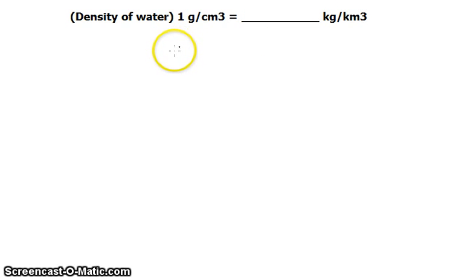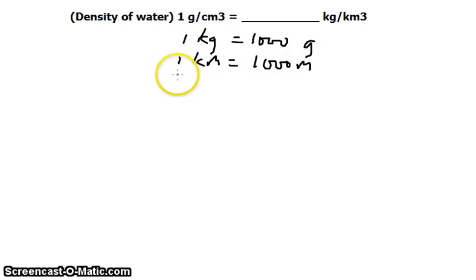We need to relate the units to one another and find a conversion factor that would suit it. From grams to kilogram, we know that 1 kilogram equals 1000 grams. We also know that 1 kilometer equals 1000 meters and 1 meter equals 100 centimeters.